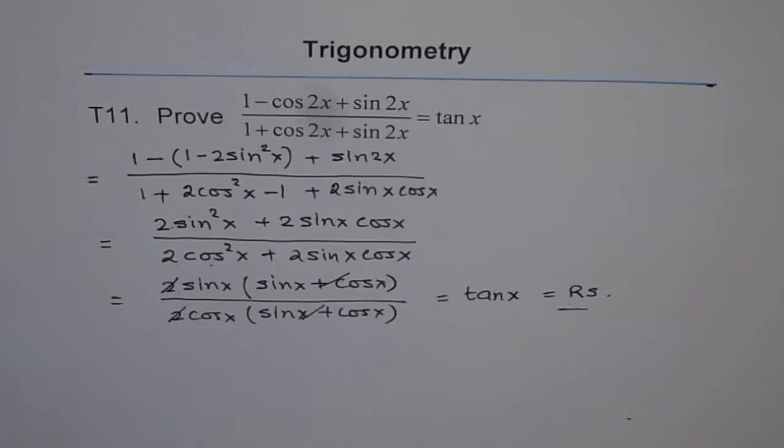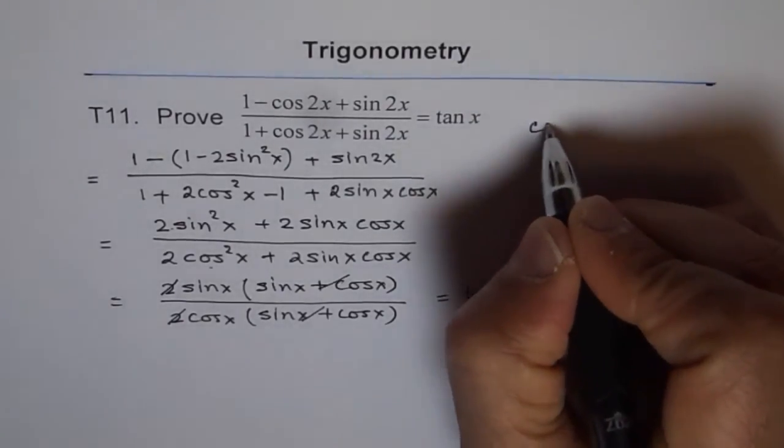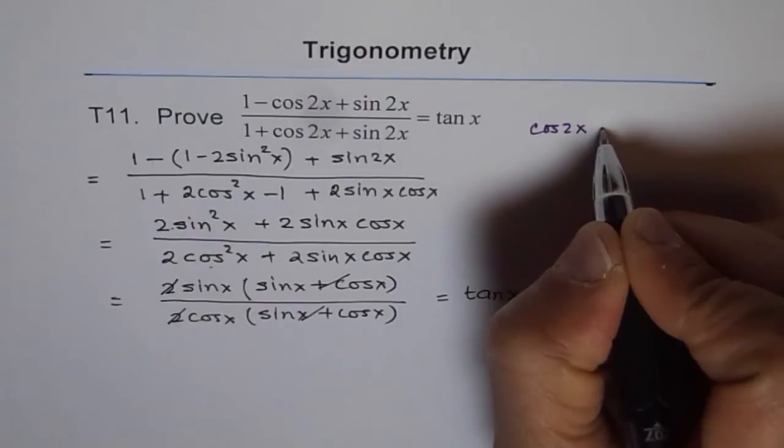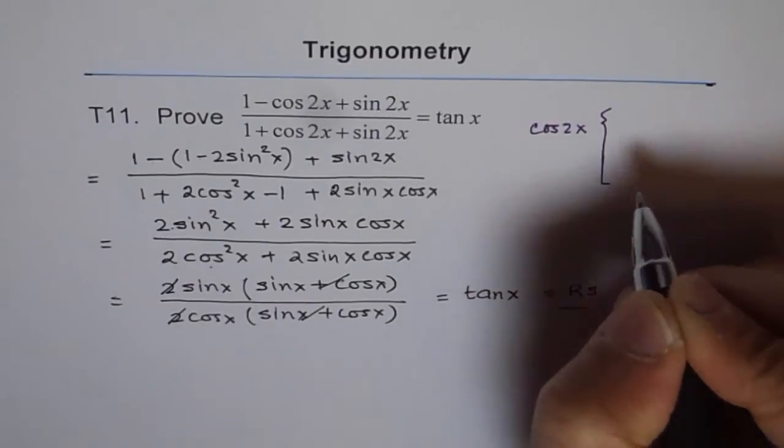So here, think like this. That you have cos 2x, and that is always a very critical decision. Which could be written in many different forms.